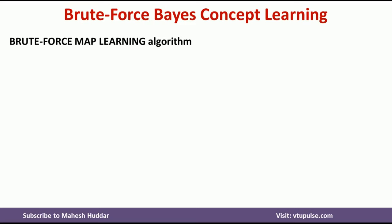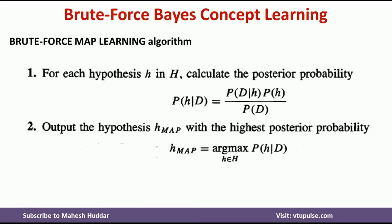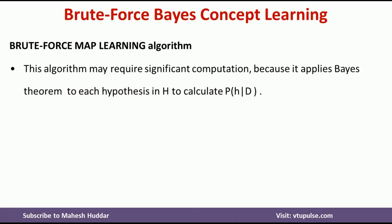Now, we will discuss the brute force MAP learning algorithm. There are two steps. The first step: for each hypothesis H in H, calculate the posterior probability. So first, we calculate the posterior probability for every hypothesis in the hypothesis space. Next, we calculate the maximum among those and output it as HMAP — that is the second step. This algorithm may require significant computation because it applies Bayes Theorem to each hypothesis in the hypothesis space to calculate the posterior probability.